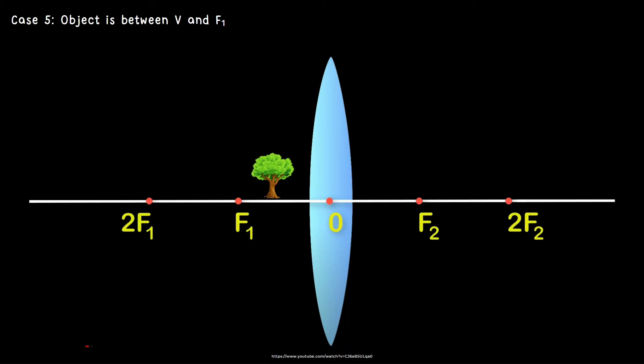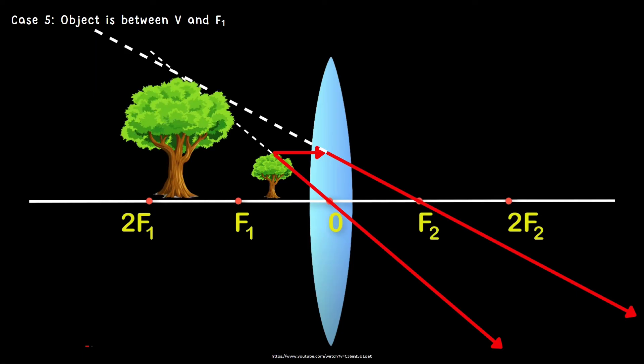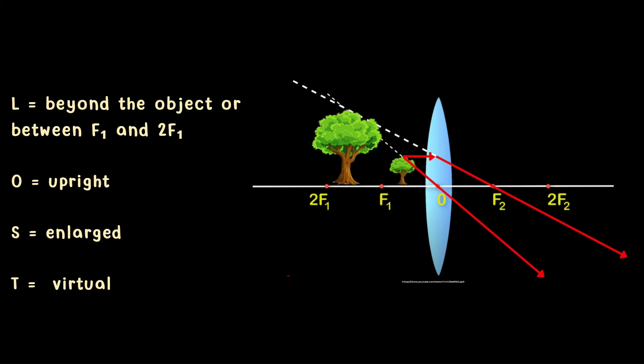Next is case number 5, when an object is between V and F1. Let's do it again. Make sure to watch carefully. As you can see, there is no intersection. But we always extend to know if they will still intersect. And there, they intersected, therefore, the image is here. Let's look at the properties of the image. Where was the image found? This is beyond the object or between F1 and 2F1. For orientation, since the image is not inverted, this is upright or erected. For the size of the image, as you can see, it is enlarged. And type of image is virtual since the image is upright.